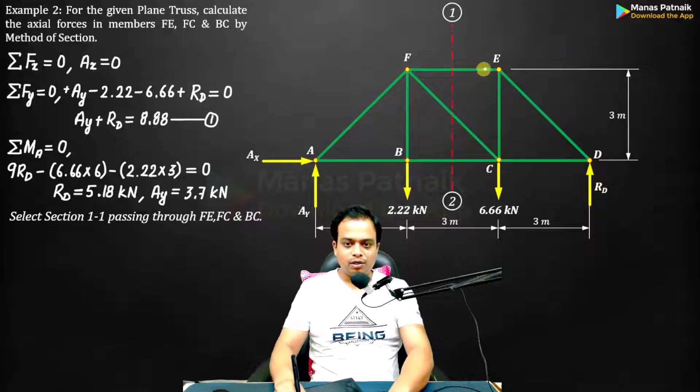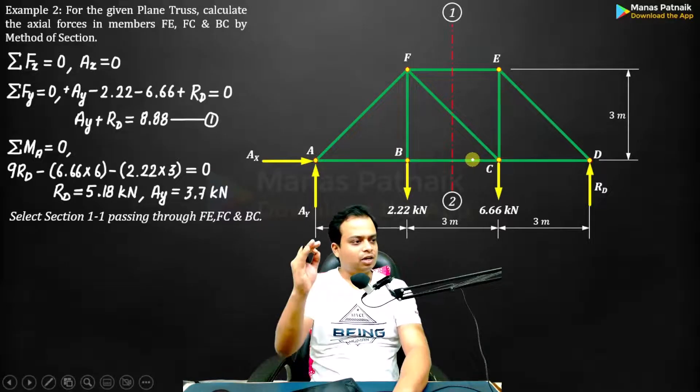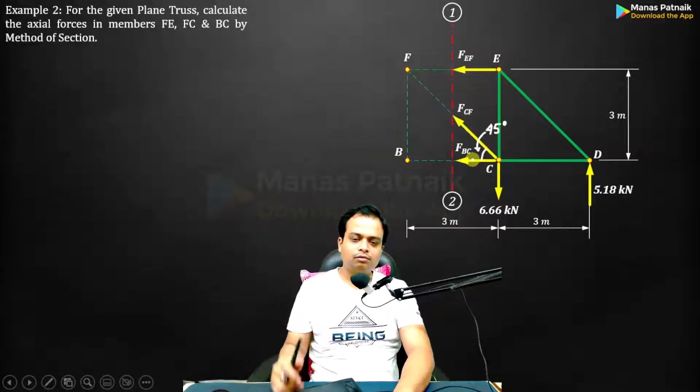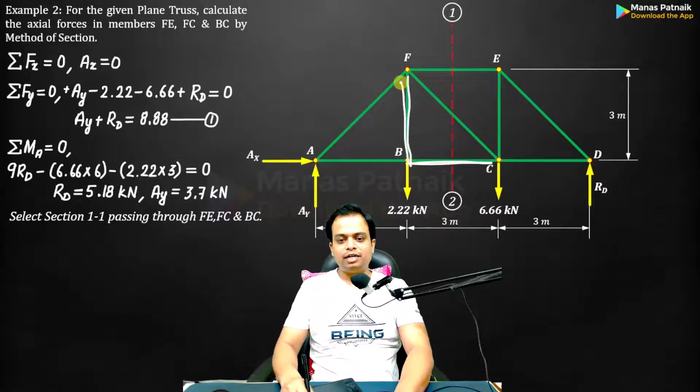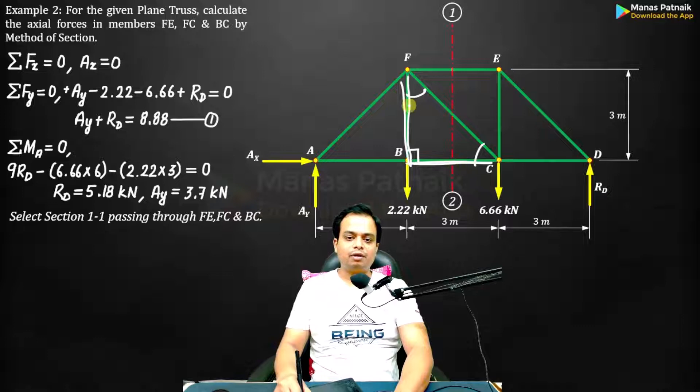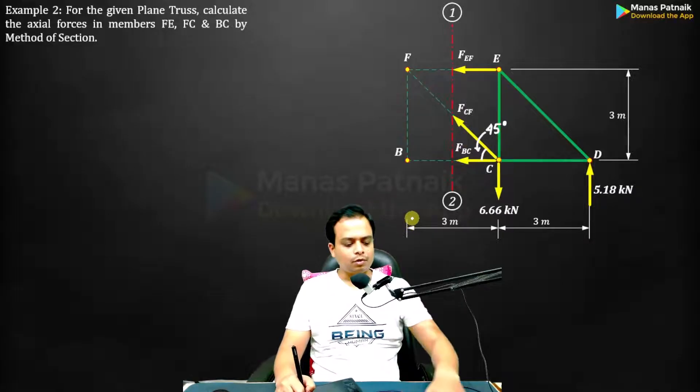So let's start. Force from E towards the section, from C towards the section. And this is how it would look. Obviously, this is 3 and this is 3. Since these two sides are the same and here the angle is 90 degrees, these two angles will be the same. So 45 and 45. I have already done that. Very basic. Done.